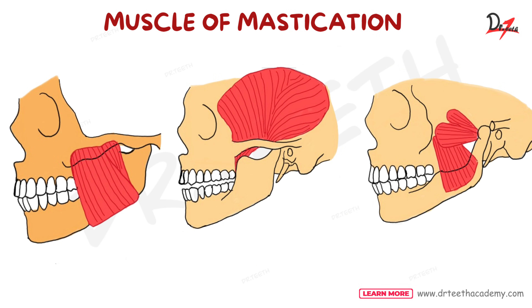Let's jump to our next topic — the muscles of mastication. The purpose of muscles of mastication is to help the mandible move in various directions during mastication and speech. We have four muscles of mastication: the masseter, temporalis, lateral pterygoid, and medial pterygoid. We'll discuss their movements in detail in the temporomandibular joint video.